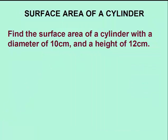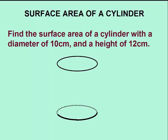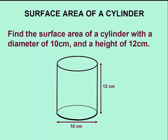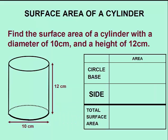Next, we will calculate the surface area of a cylinder having a diameter of 10 centimeters and a height of 12 centimeters. To produce this cylinder, we'll draw two circles appearing as ovals, and then connect the two ovals with a pair of parallel lines. We'll put in our dimensions and set up our table to calculate the surface area.